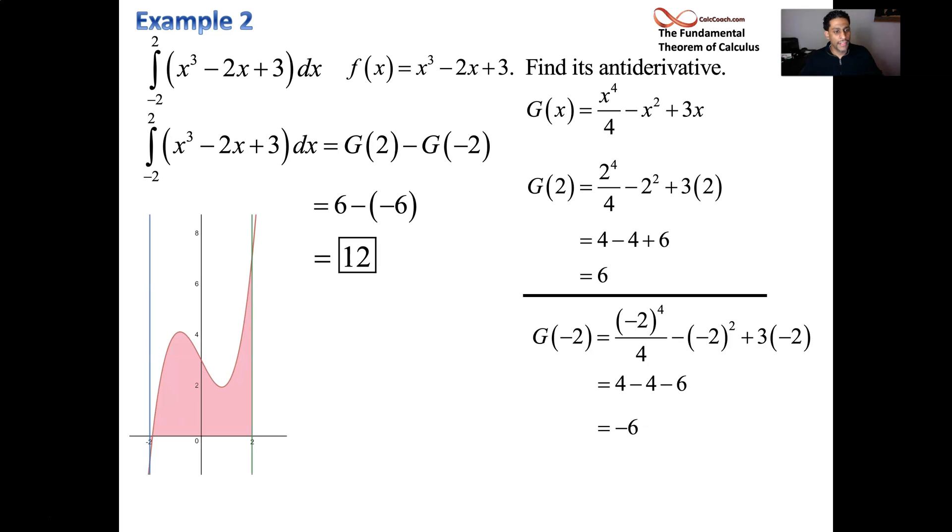Here's the actual graph and actually part of it dips below the x-axis, believe it or not, but it's a net area from negative 2 to 2. The net area. Negative areas below, positive areas above, and the net accumulated area.